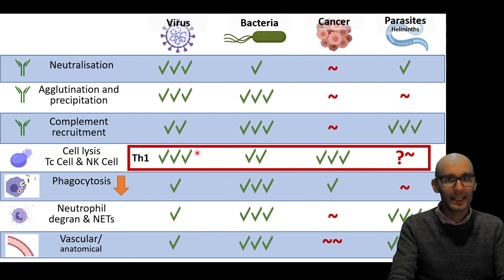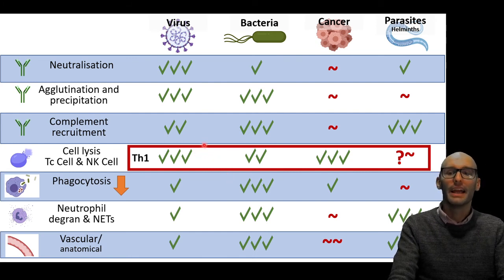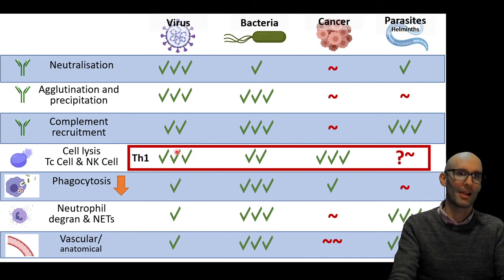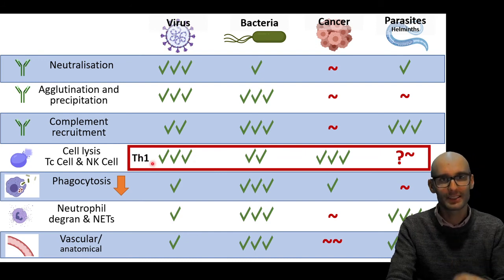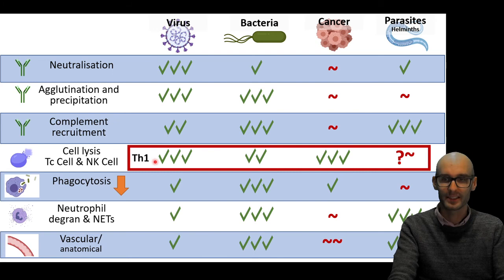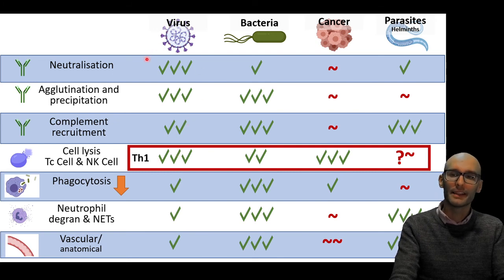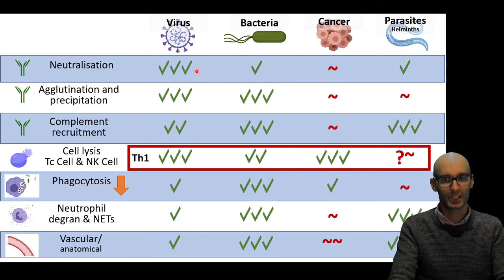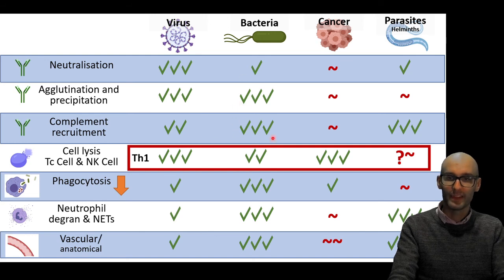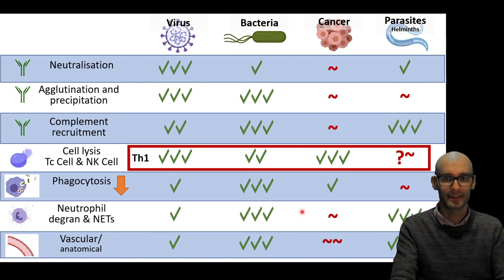because we get that proliferation of those cytotoxic T cells that can attack aberrant cells that are producing non-self antigens. And it also down-regulates phagocytosis. And phagocytosis is quite important for bacterial infections.